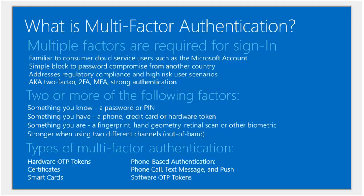Multi-factor authentication is simply a way to block password compromises from remote. When you open up your systems for sign-in anywhere on the internet, having a single factor - a password, something you know - means someone can try to guess that password. If you have two factors, even if someone guesses the password they have to present the second factor to sign in. The second factor is something you have, typically a phone. It's also known as two-factor authentication or strong authentication.